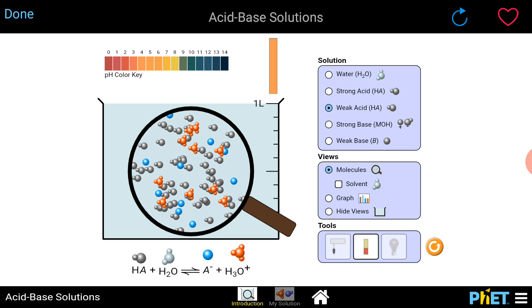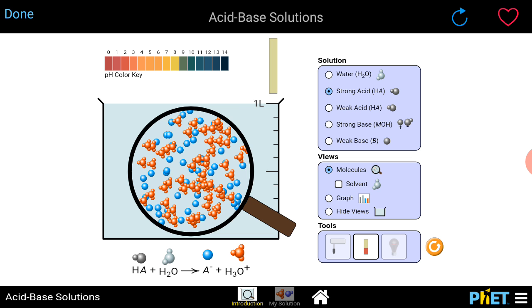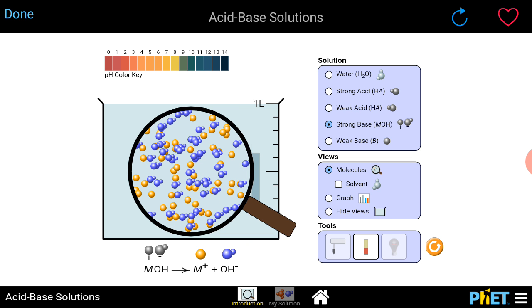What happens if we put it in the strong base? The strong base has lots and lots of molecules like the strong acid. It turns navy blue, it turns teal.